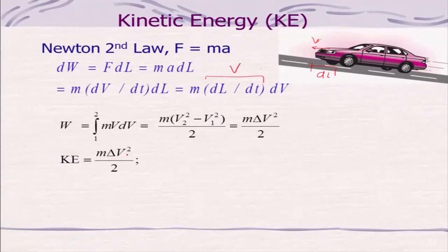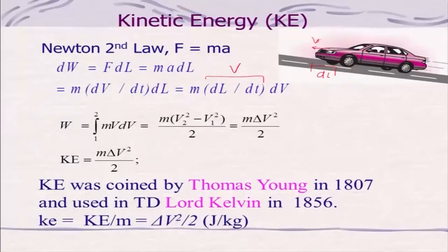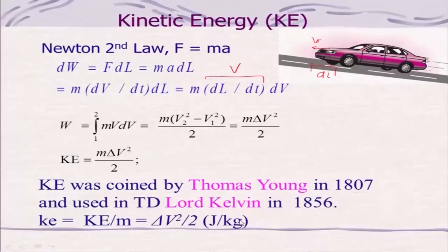The reference for this kinetic energy is with respect to the road — all displacement, velocity, and acceleration are referenced to the road. This term 'kinetic energy' was coined for the first time by Thomas Young in 1807, and later used by Lord Kelvin in thermodynamics around 1856. The kinetic energy per unit mass is ΔV²/2 in joules per kg, which is the specific kinetic energy.